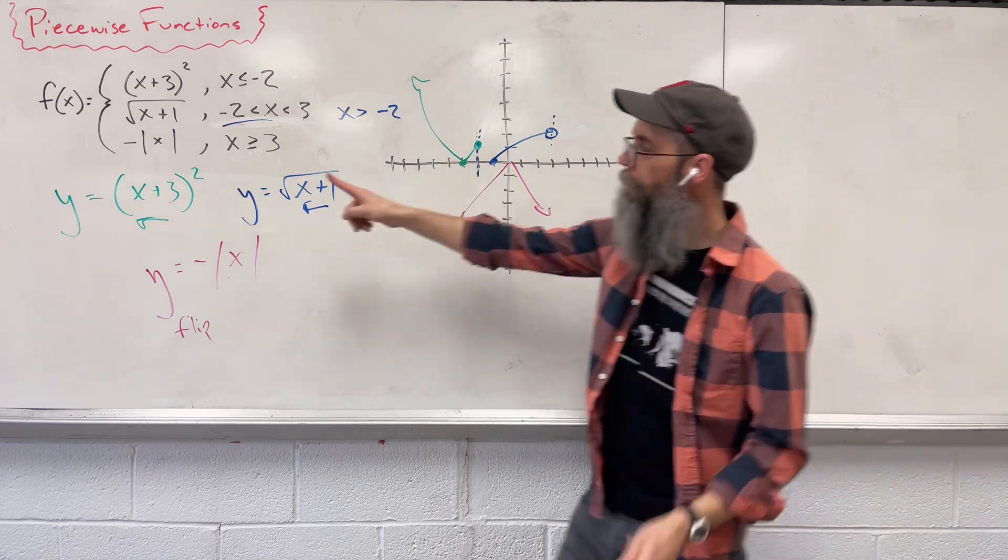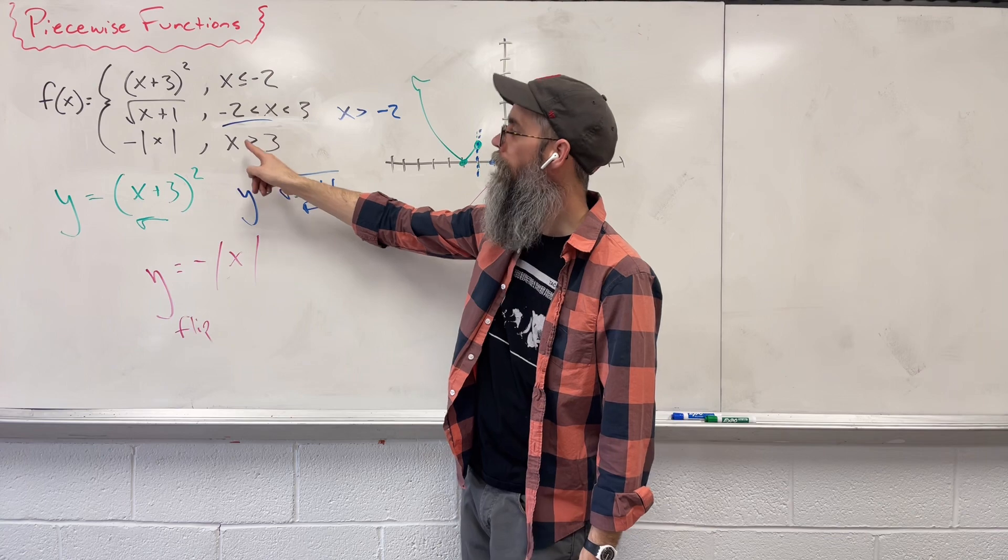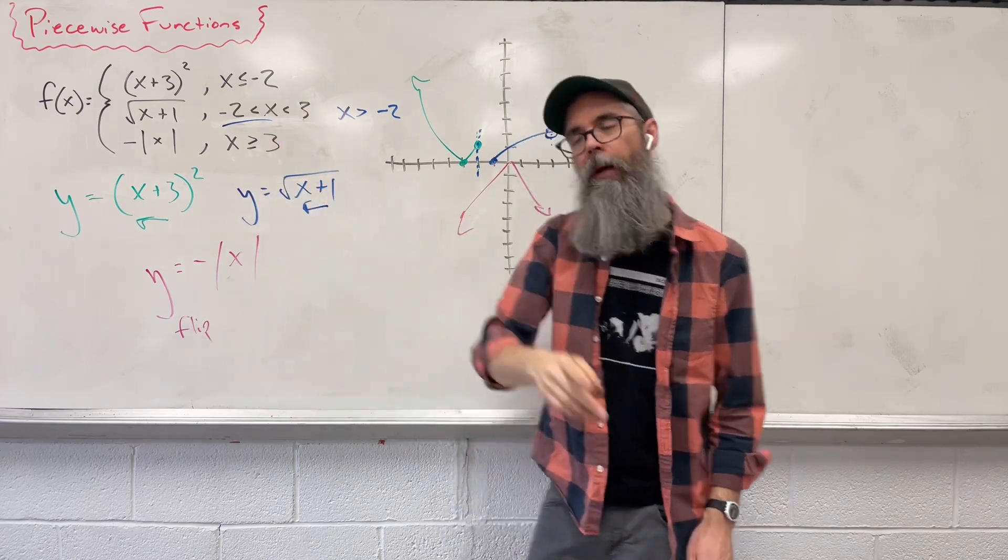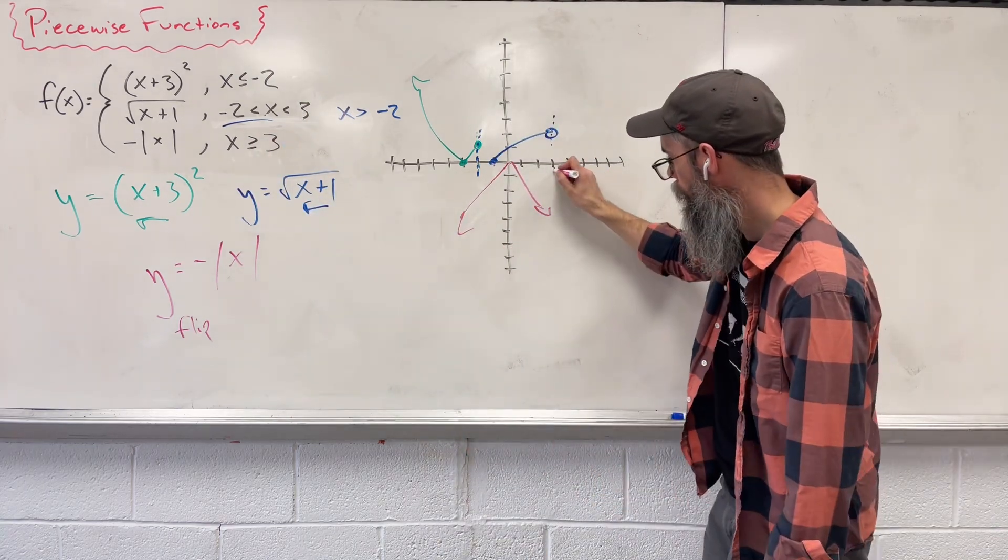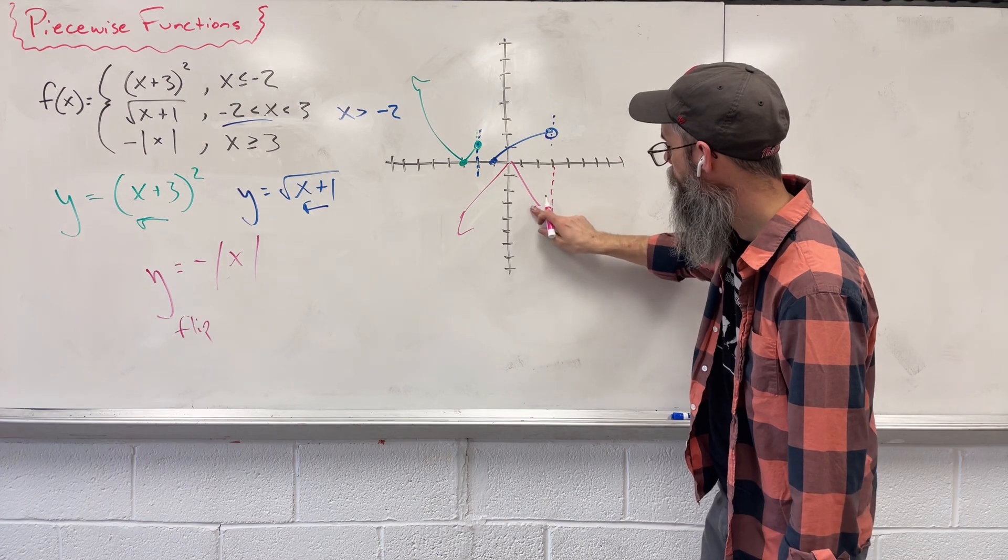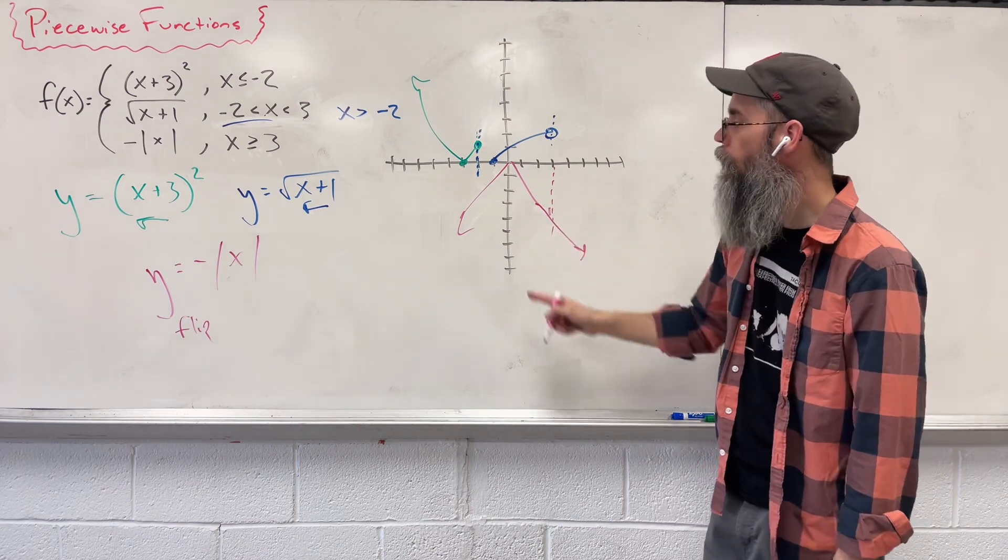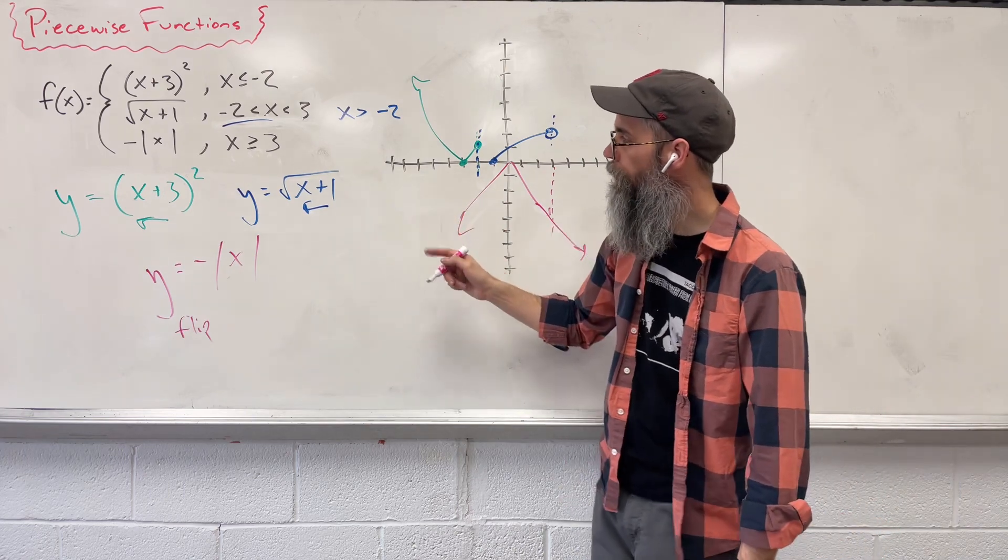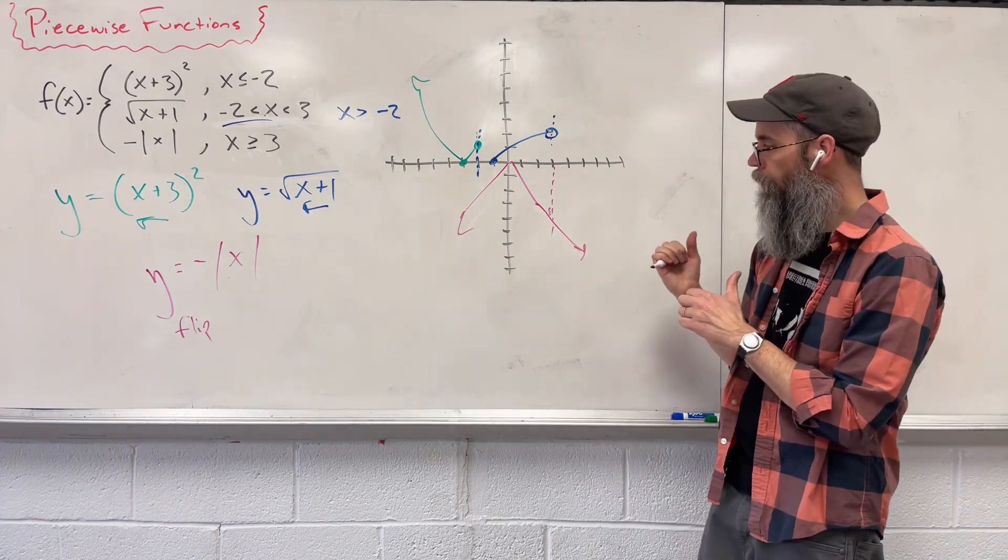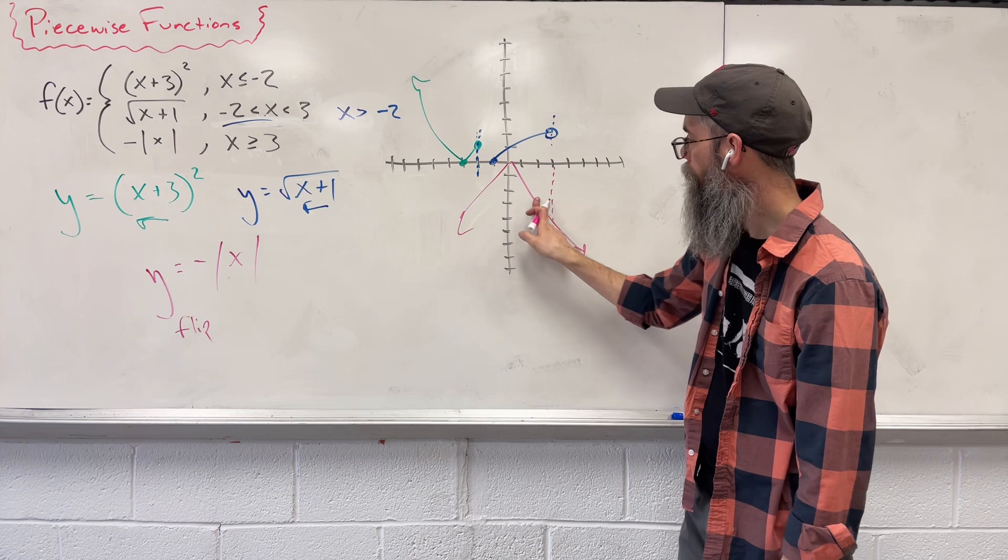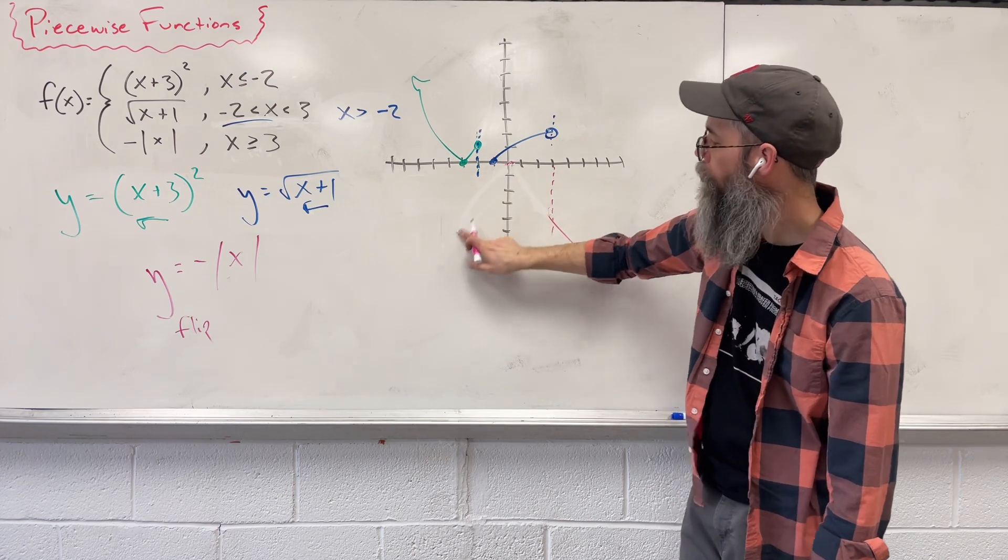Using our constraints, we keep the graph that is larger than 3. So we find 3, we build a little wall. We've got to extend this out a little. We build a wall at 3. We keep the graph that is larger than 3. That's everything to the right side. Everything over on the left, goodbye.